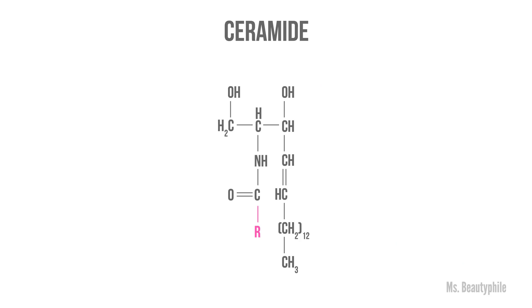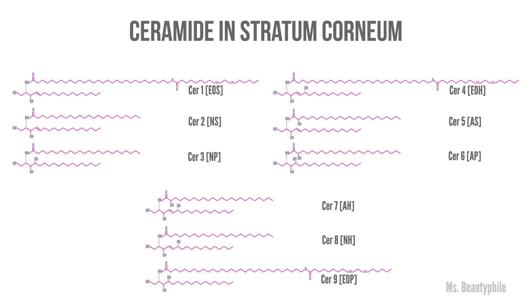What is a ceramide? They are a family of waxy lipid molecules. Lipids are fats or oils that are found in the body. They consist of a fatty acid linked to a sphingoid base — I love that word — and they are connected by an amide bond. There are at least nine major ceramides present within the stratum corneum, which is the outermost layer of skin. They have conveniently named them ceramides one through nine.